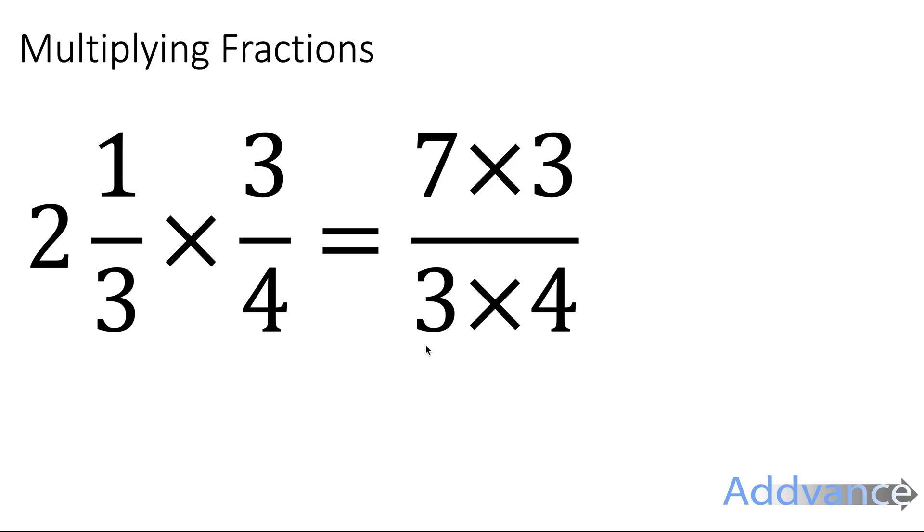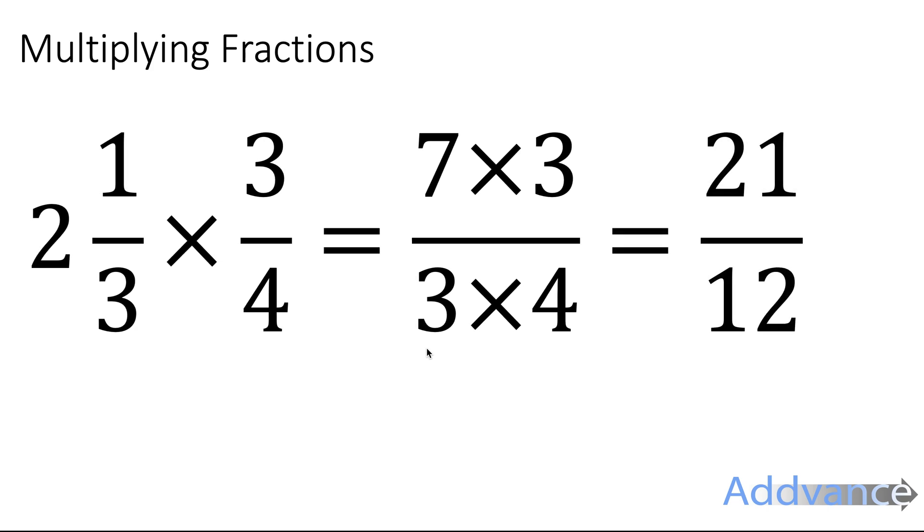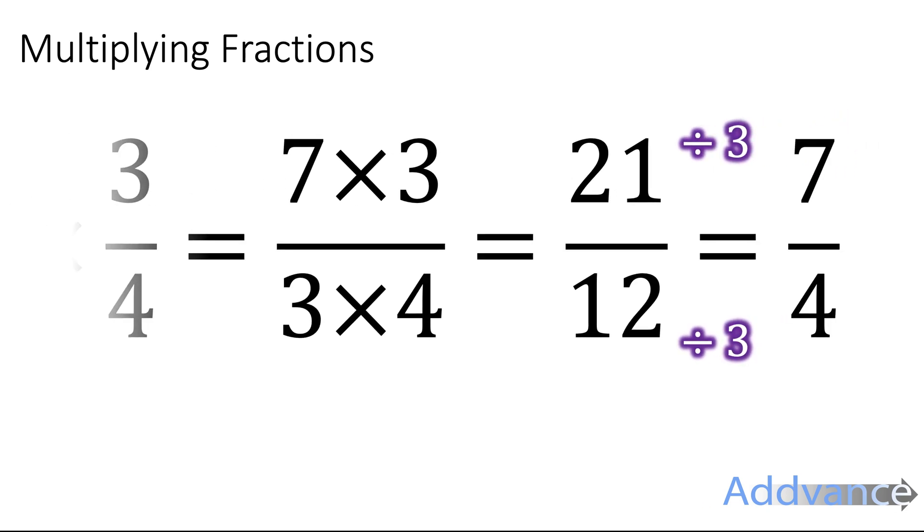We multiply the top and we multiply the bottom. 7 times 3 is 21, 3 times 4 is 12. We divide by 3 and we get 7 quarters.